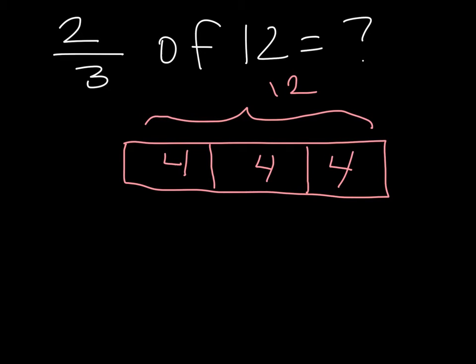Now that the 12 got split into 3 thirds, and each part gets 4, what can I do next? I could multiply my answer by 2. Why am I doing that? Because the numerator tells me that I need 2 parts.